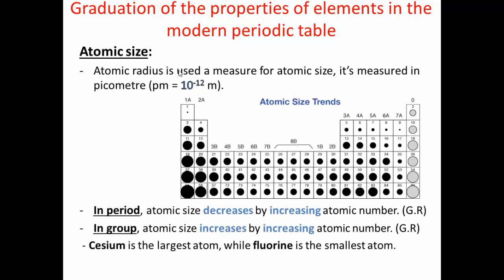Today we are going to talk about some properties of elements. The first one is atomic size. Atomic size is the size of an atom, and atomic radius is used as a measure for atomic size. As it is very small, it is measured in picometer unit, which equals 10 to the power of minus 12 meters.